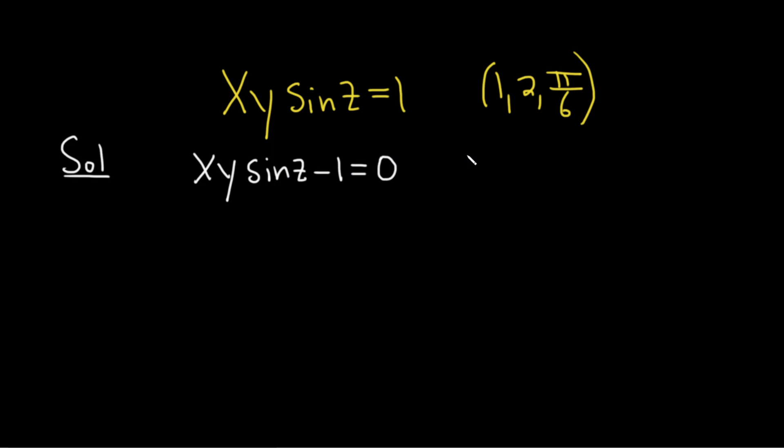Okay, so recall that the equation of a plane is pretty simple. It's simply a times x minus x1 plus b times y minus y1 plus c times z minus z1 equals 0. This is the equation of a plane where x1, y1, and z1 is a point on your plane.